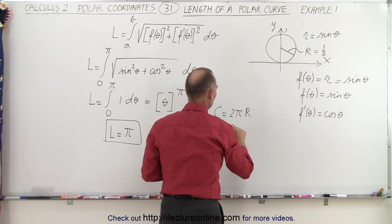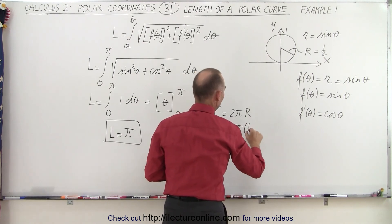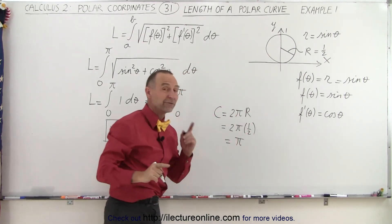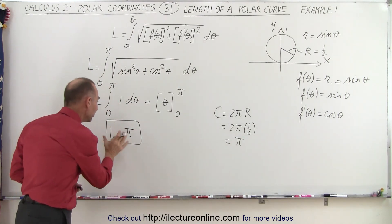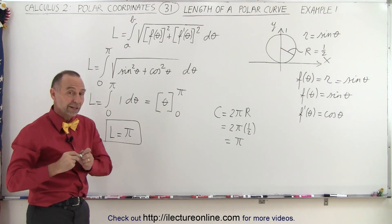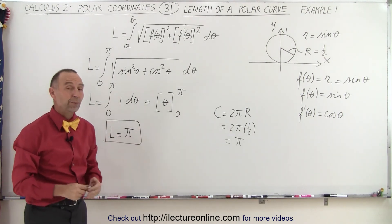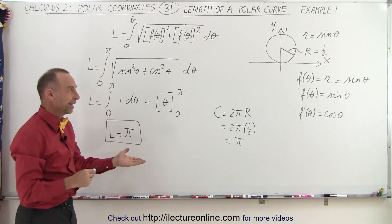So two times pi times one half is indeed equal to pi. So the circumference of that particular circle, where it's defined by r equals sine of theta, is indeed equal to pi. And therefore, the length that we found matches what we would expect to see. And that's how it's done.